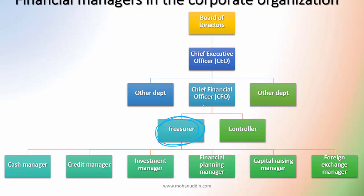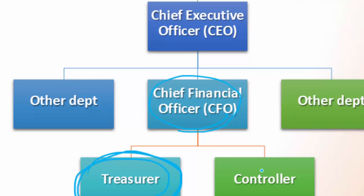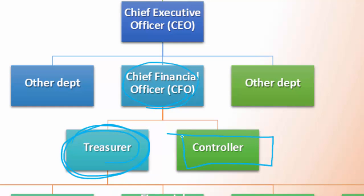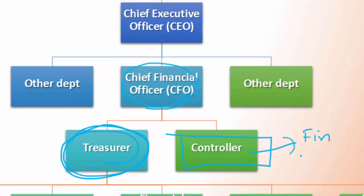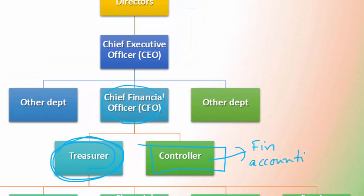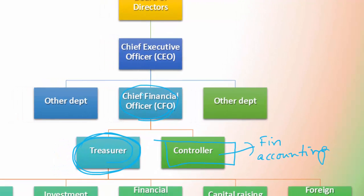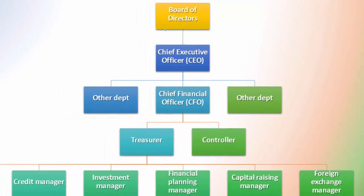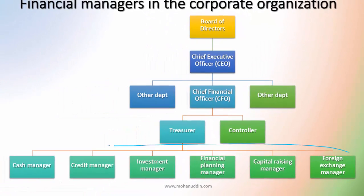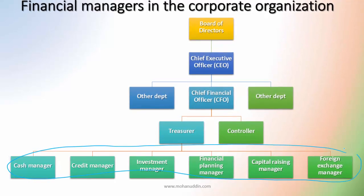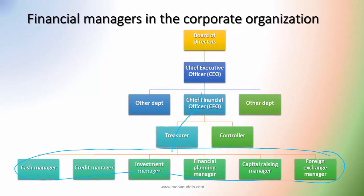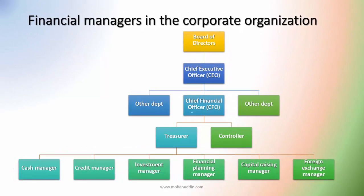The treasurer is responsible for all these financial affairs and works under the chief financial officer (CFO). There is also a controller, who is responsible for the financial accounting affairs of the firm. The finance function is therefore performed by this whole set of individual managers, including the treasurer and the CFO. I hope you have understood the tasks of a financial manager and how the financial manager fits within a corporate organization. Thank you very much.